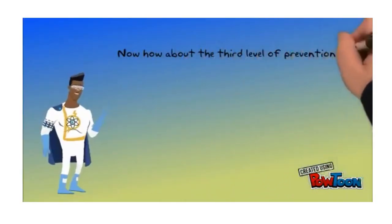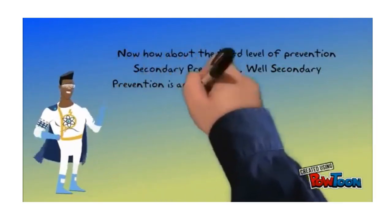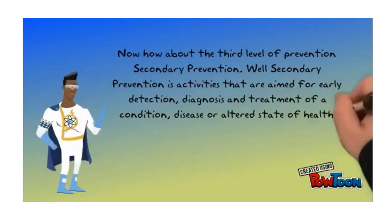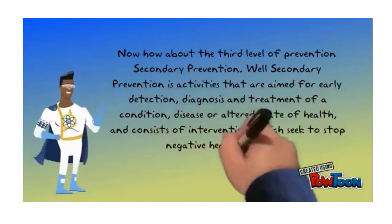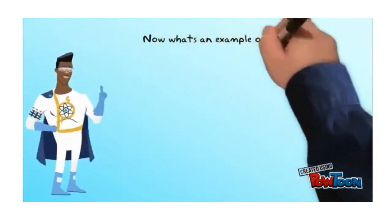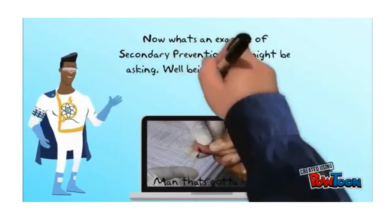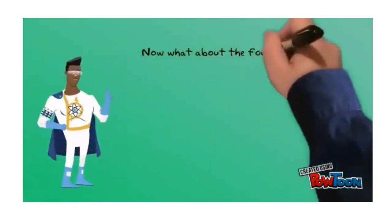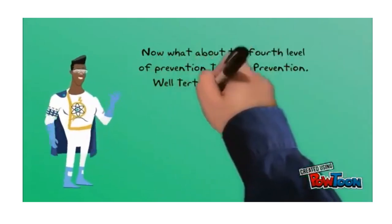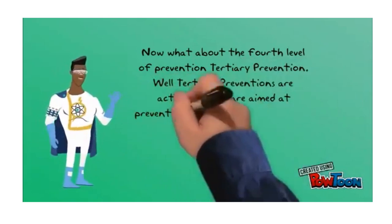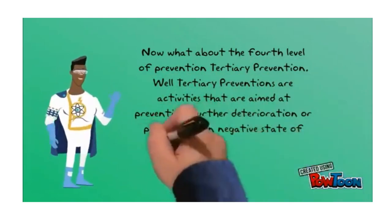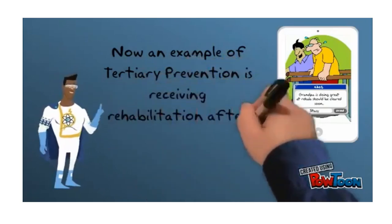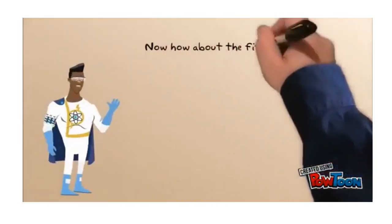The third level of prevention is secondary prevention. Secondary prevention is activities aimed at early detection, diagnosis, and treatment of a condition or disease, and consists of interventions which seek to stop negative health symptoms. An example of secondary prevention is being screened for a disease like diabetes. The fourth level is tertiary prevention — activities aimed at preventing further deterioration or progress of a negative state of health. An example is receiving rehabilitation after a stroke.